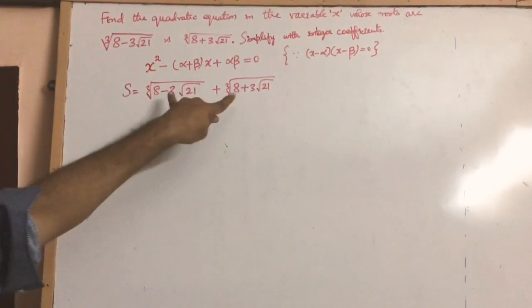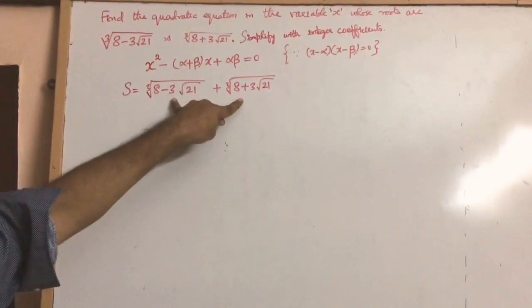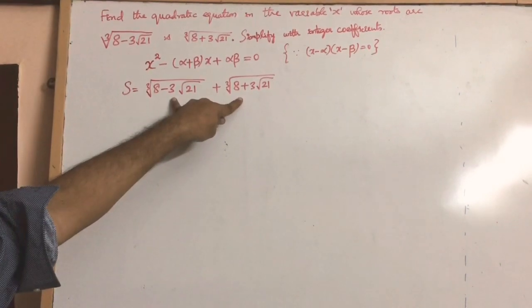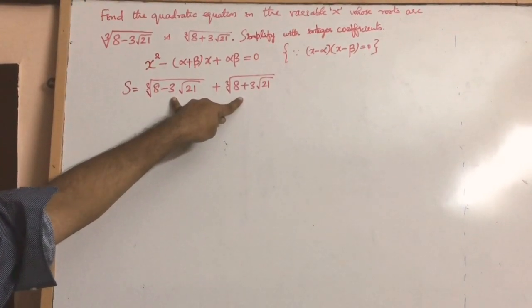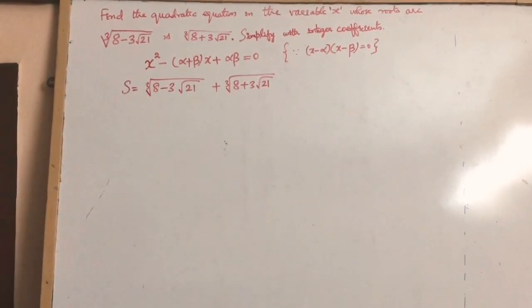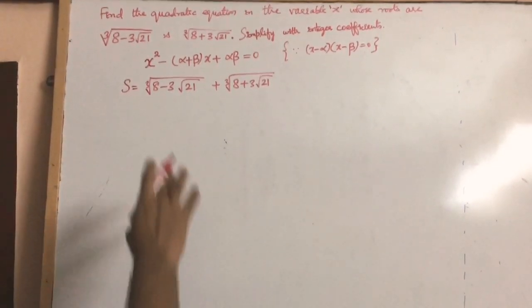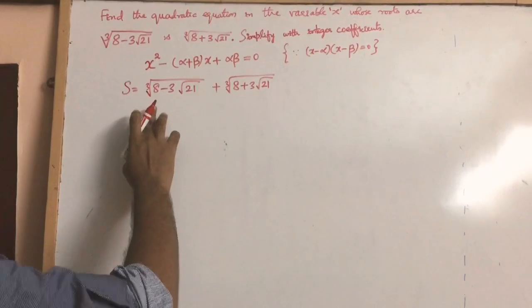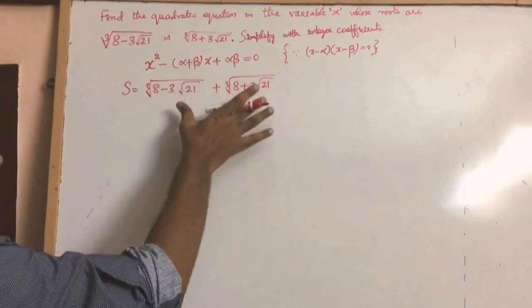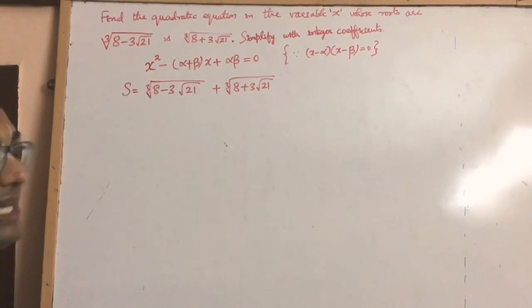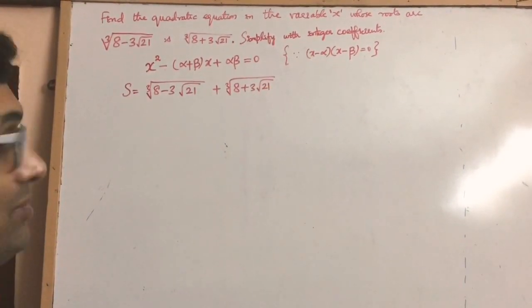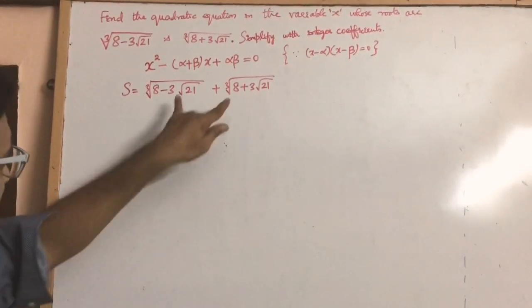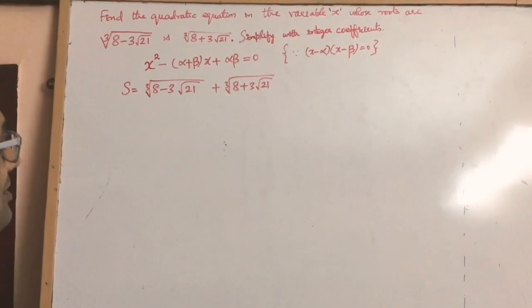Now these roots are conjugates, and so we can apply the basic rules of algebra to try and simplify these numbers — the sum and the product.